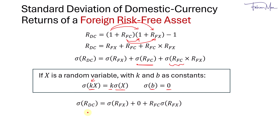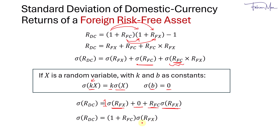So the standard deviation of domestic currency returns for a foreign risk-free asset: the standard deviation of the foreign risk-free asset in its own local currency is 0, so that term drops out. R_FC becomes the coefficient to the standard deviation of changes in the exchange rate. Recognizing that the coefficient of the first remaining term is 1, we factorize to get 1 plus R_FC multiplied by the standard deviation of exchange rate changes — which we can call currency risk. That's where the formula comes from.